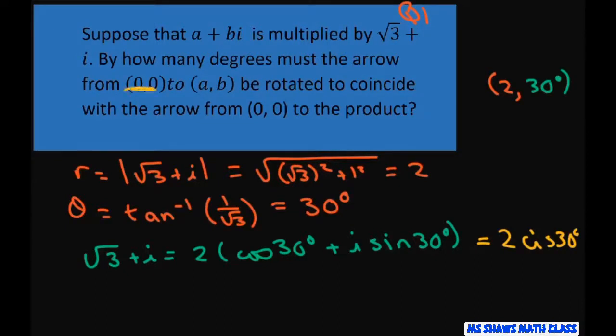So starting from the origin here, we're rotating it from here to 30 degrees, and this length is 2. And there's your rotation of 30 degrees. So multiplying by square root of 3 plus i rotates the arrow by 30 degrees.